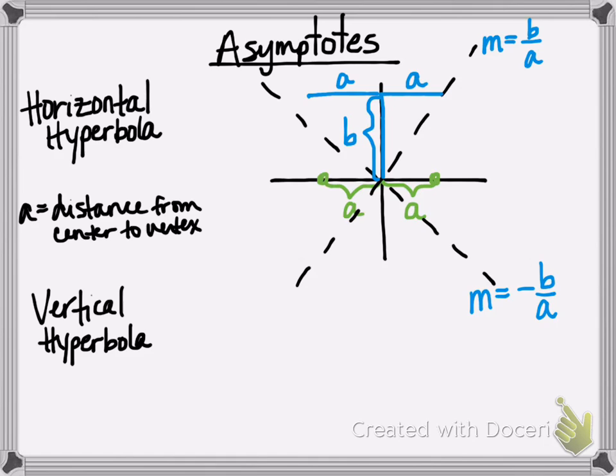So for a hyperbola, let me go ahead and draw in the branches. The hyperbola branch, one's going to be opening to the right. The other's opening to the left. It's what we call a horizontal hyperbola. Then the slope of your branches are going to be B over A and negative B over A.